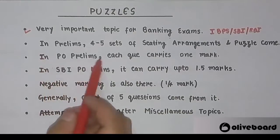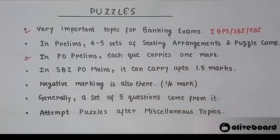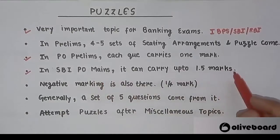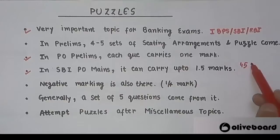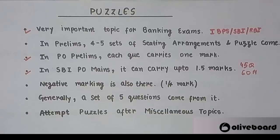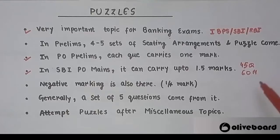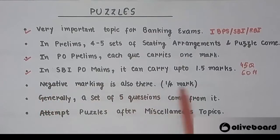In PO prelims each question carries 1 mark. In SBI PO it can carry up to 1.5 marks. In SBI PO you have 45 questions and 60 minutes to solve them, so basically each question does not carry exactly 1 mark — some questions are 1.33 marks and some can be up to 1.5 marks. So basically: 45 questions, 60 marks, 60 minutes. Negative marking is also there.